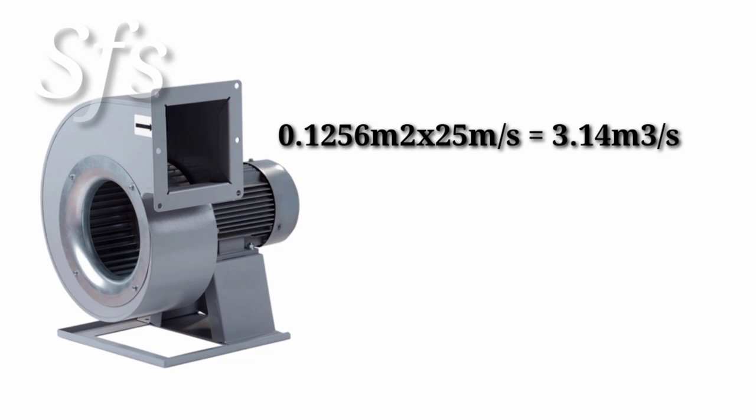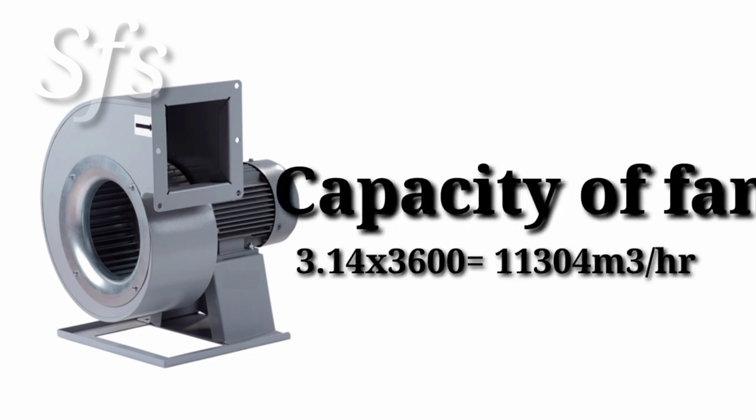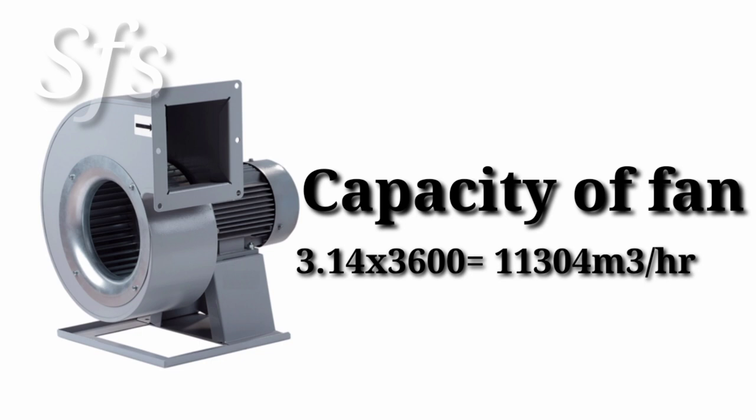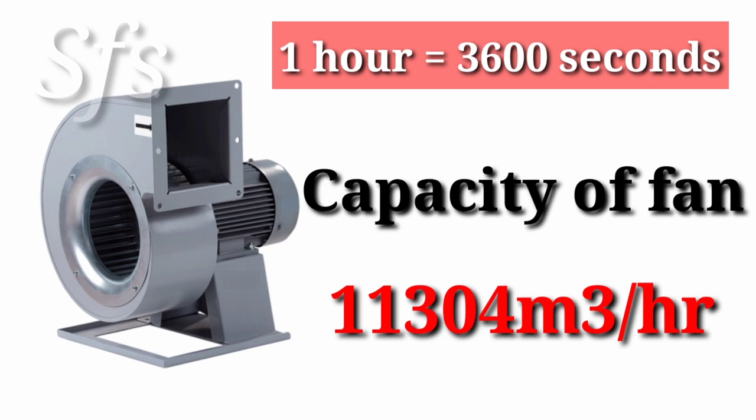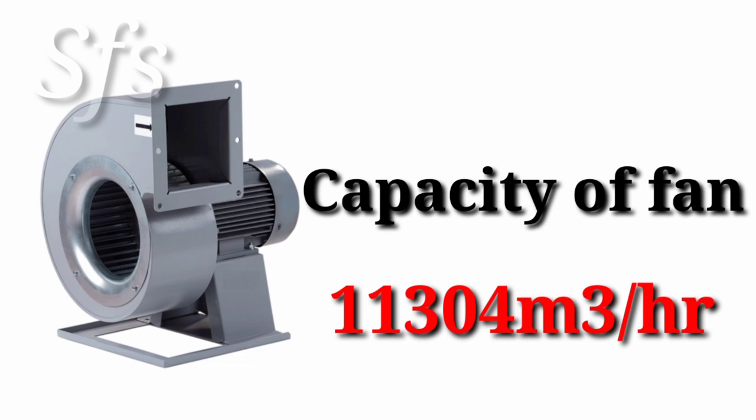To calculate the capacity in meter cube per hour, multiply this value by 3600. So 3.14 multiplied by 3600 equals 11,304 meter cube per hour. Why do we multiply by 3600? Because in one hour there are 3600 seconds. So the capacity of that fan is 11,304 meter cube per hour.